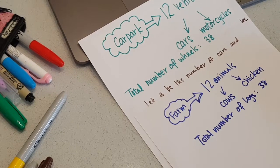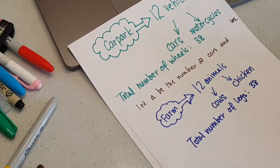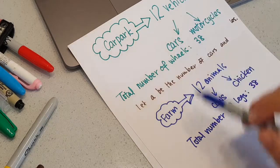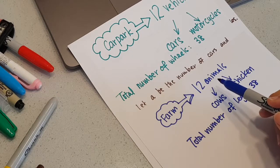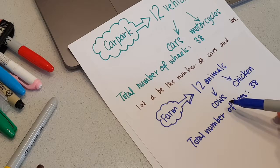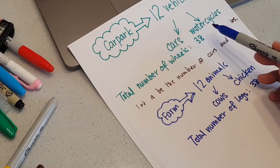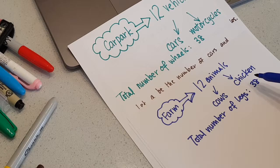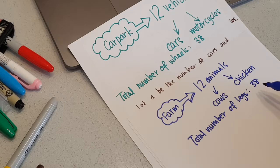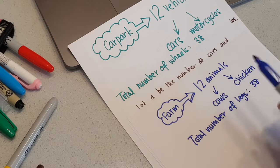I'm going to do a variation of this question. Instead of a car park with 12 vehicles, I have a farm with 12 animals. Instead of cars with four wheels, I have cows with four legs. Instead of motorcycles with two wheels, I have chickens with two legs. The total number of legs of all these 12 animals is 38.